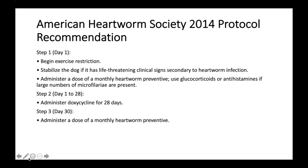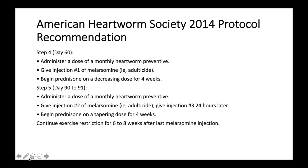The American Heartworm Society 2014 protocol: Step 1 (Day 1) — begin exercise restriction, stabilize the dog if life-threatening clinical signs are present, administer a dose of monthly heartworm preventive, and use glucocorticoids or antihistamines if a large number of microfilaria are present. Step 2 (Days 1–28) — administer doxycycline for 28 days. Step 3 (Day 30) — administer a dose of monthly heartworm preventive. Step 4 (Day 60) — administer a dose of monthly heartworm preventive, give injection number one of melarsamine, and begin prednisone on a decreasing dose for four weeks. Step 5 (Days 90–91) — administer a dose of monthly heartworm preventive, give injection number two of melarsamine, give injection number three 24 hours later, begin prednisone on a tapering dose for four weeks, and continue exercise restriction for six to eight weeks after the last melarsamine injection.